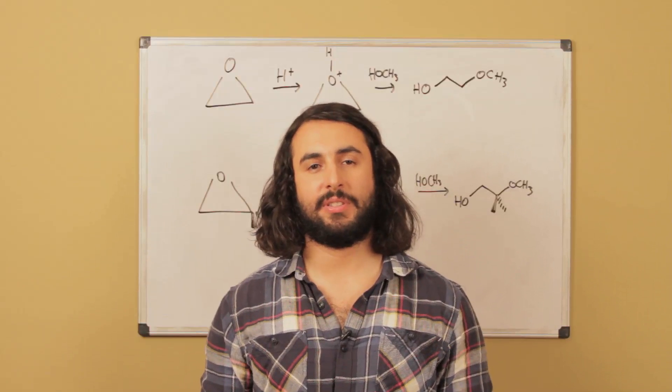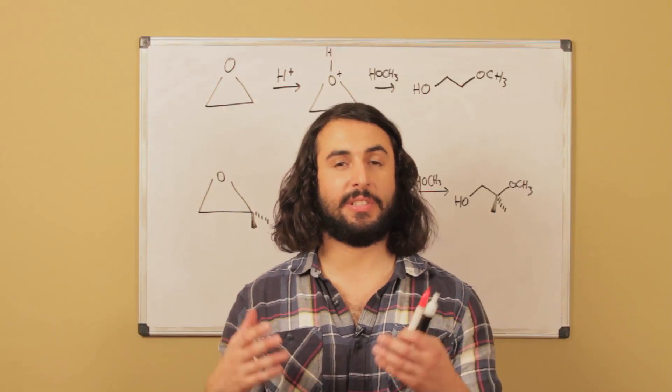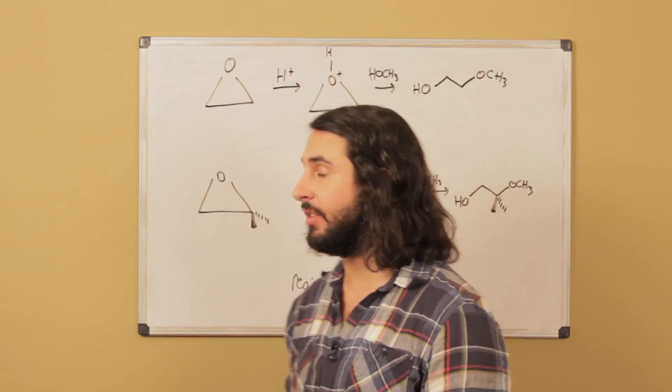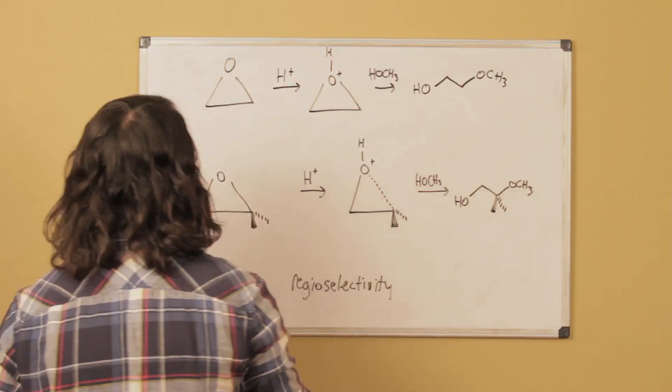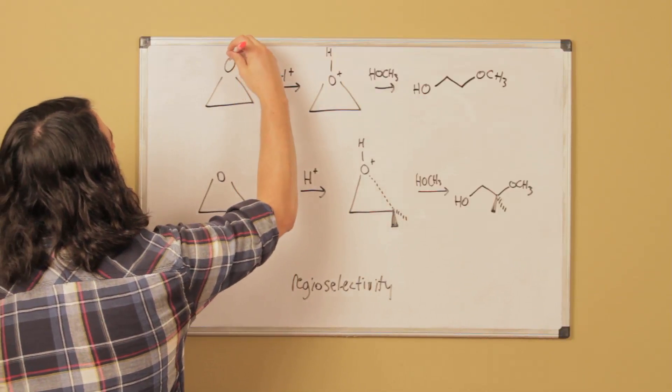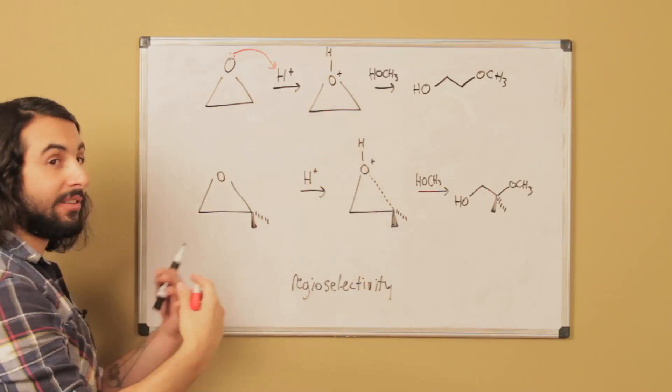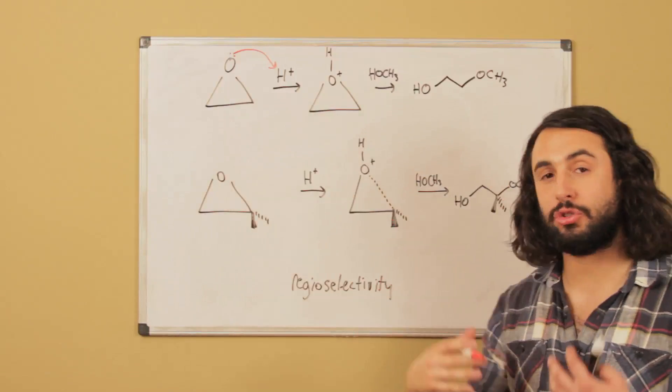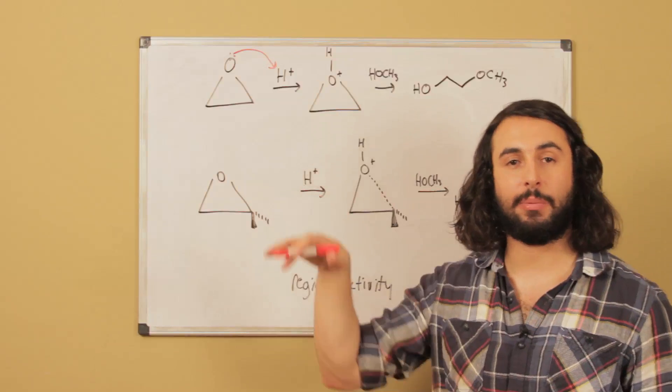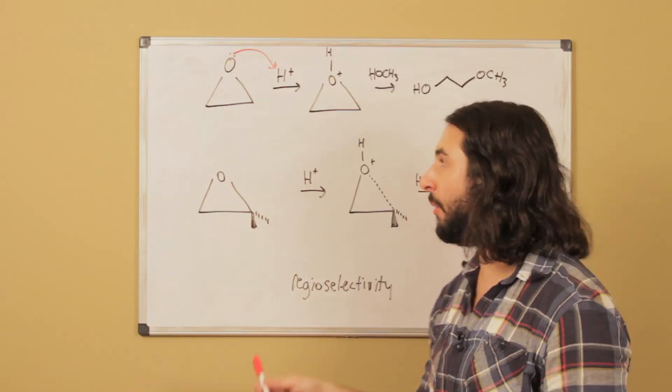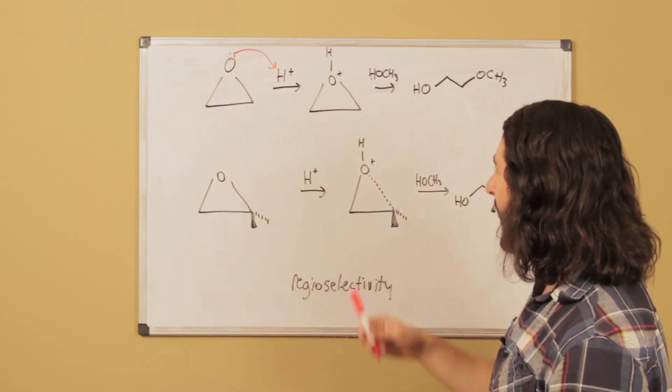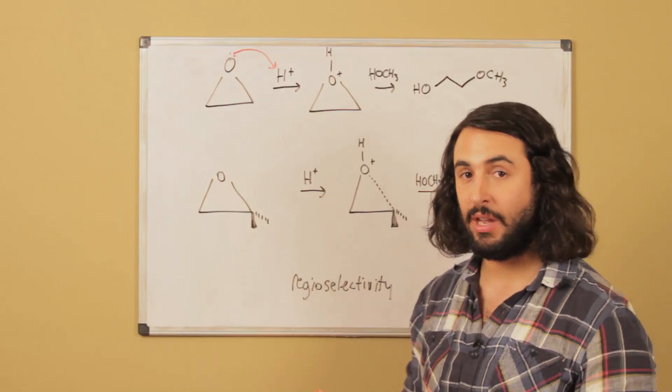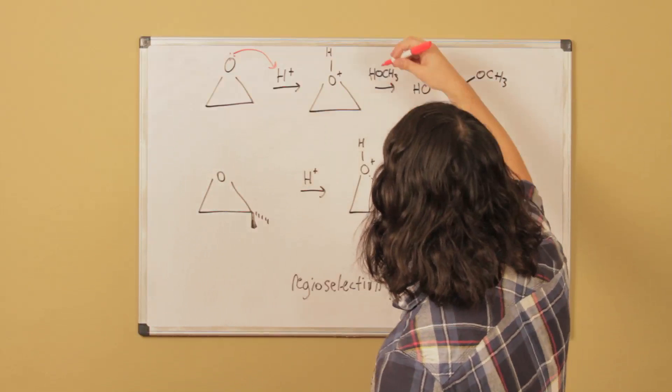We've seen what happens when an epoxide participates in a substitution reaction. Now let's look at what happens to an epoxide under acidic conditions. Here's our epoxide. We know that this, just like any oxygen, just like a hydroxyl oxygen, can go ahead and protonate. Before we saw how a strong nucleophile was going to be able to do substitution on an epoxide, but once this is protonated this behaves similarly to a hydronium or an OH2+ on a linear molecule.